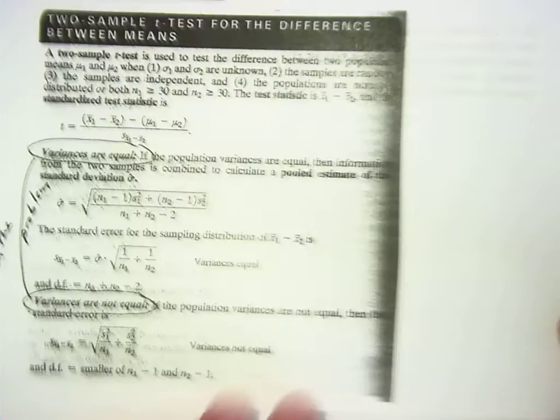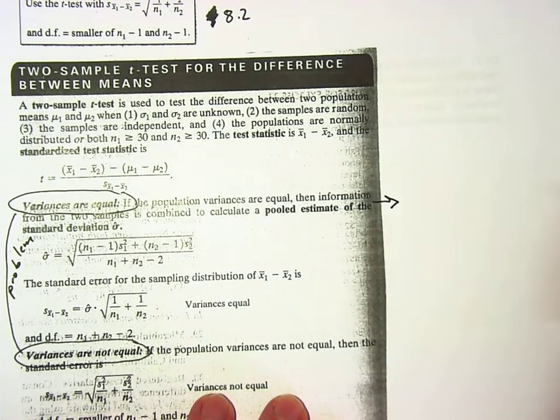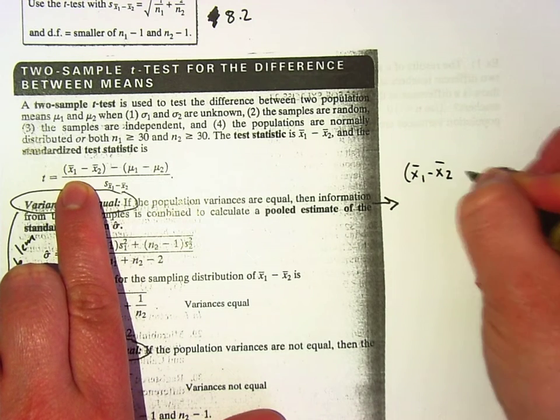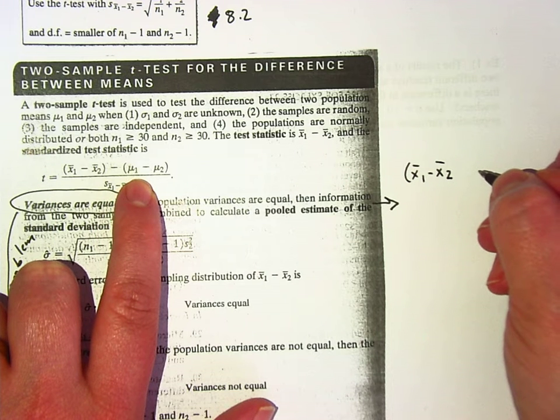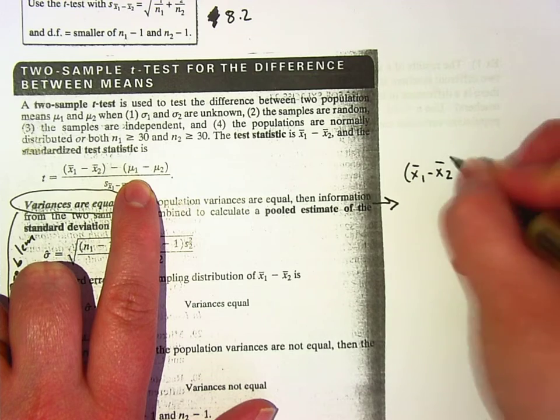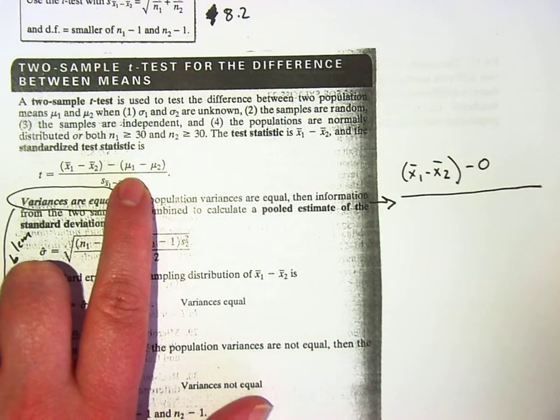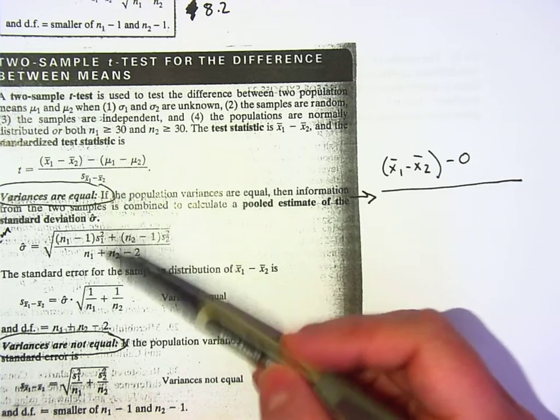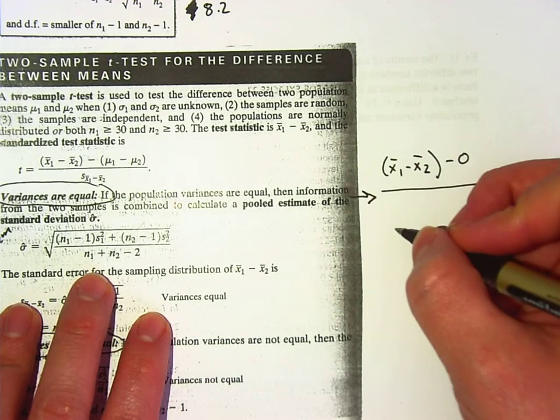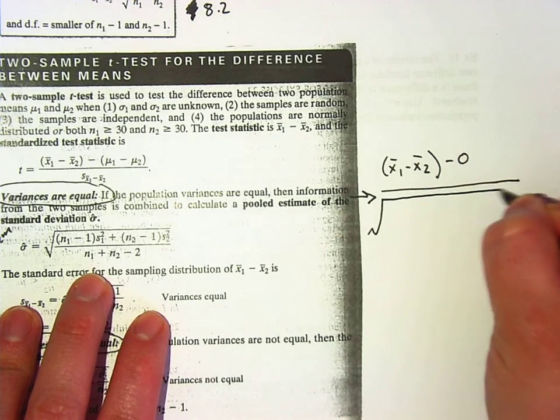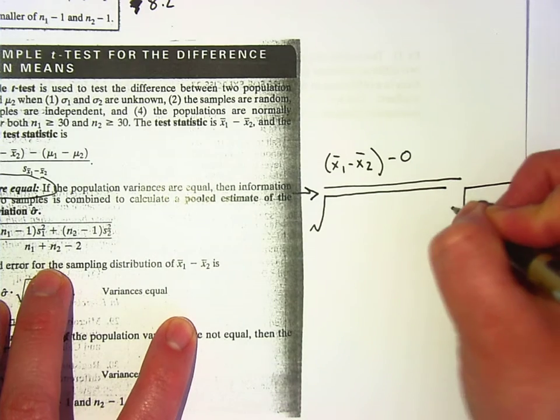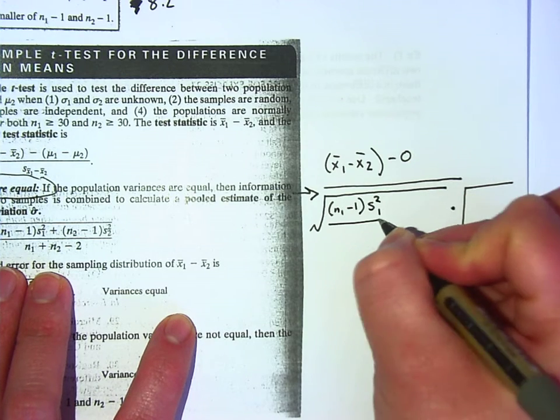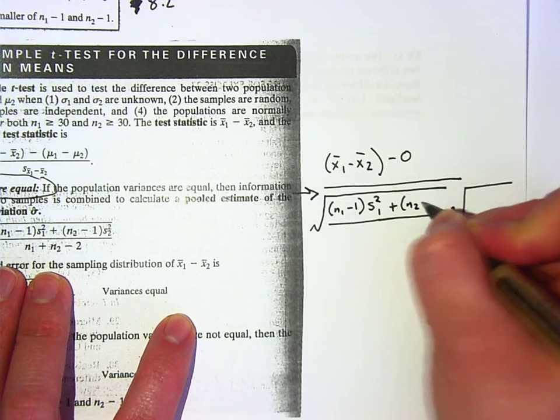So if the variances are equal, here's the formula we're going to use. And we're going to write it all out. This is hard to understand. First, we've got on top, x bar 1 minus x bar 2 minus mu 1 minus mu 2. What is that mu 1 minus mu 2 usually? 0, right? So I'm just going to write minus 0 here, but you don't have to write that in your formula. On the bottom is going to be this horrible combination of things. So there's two huge square roots. There's a really big one and then a not as big one.